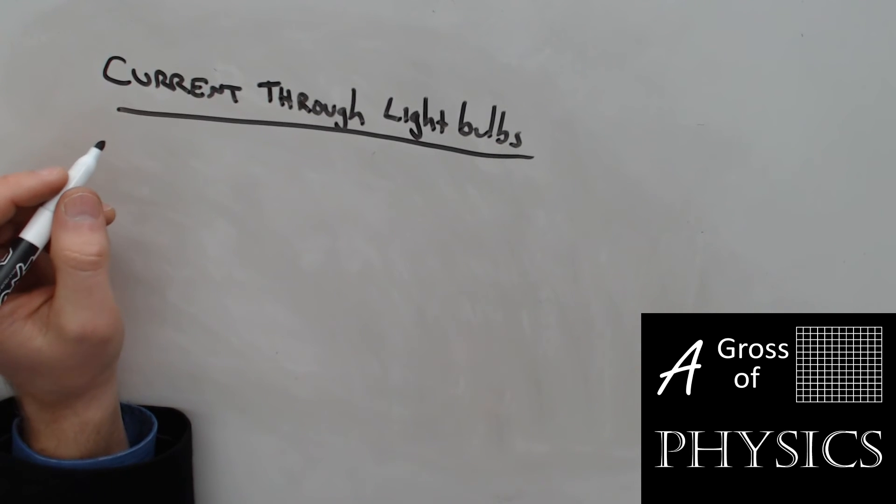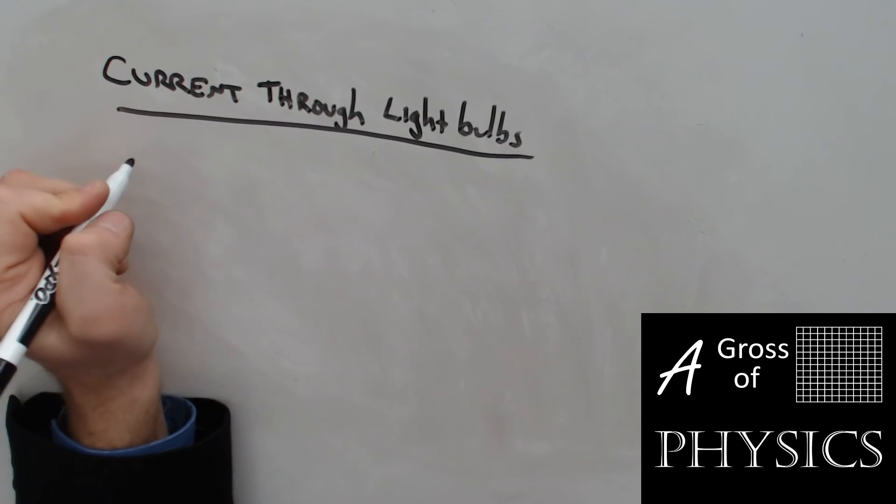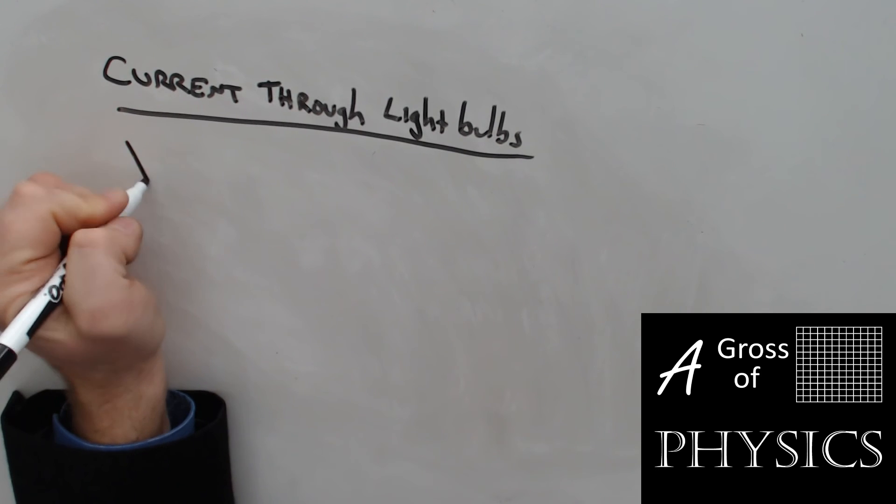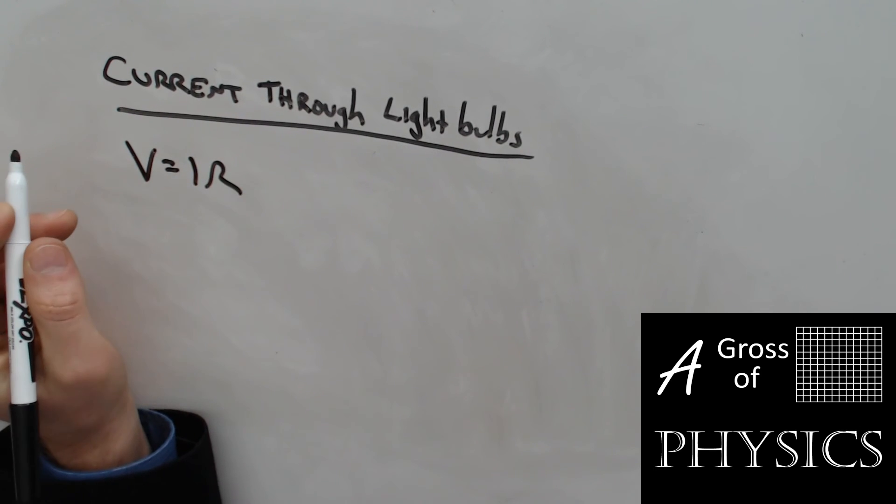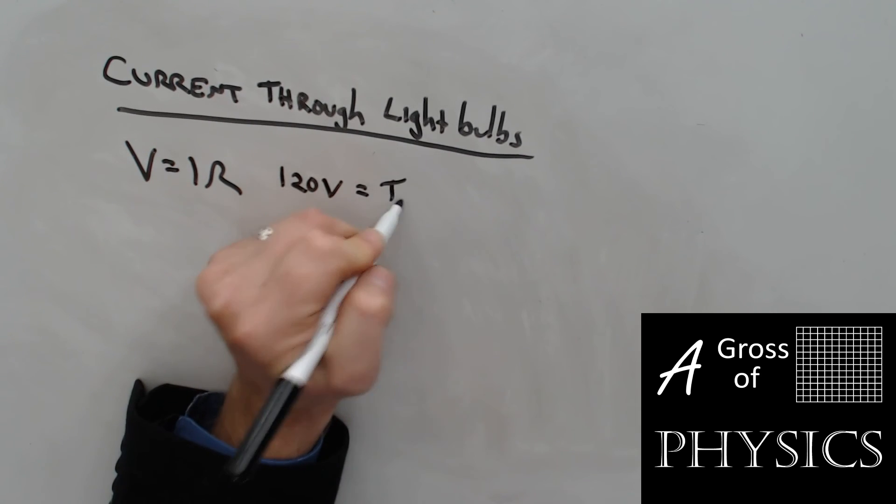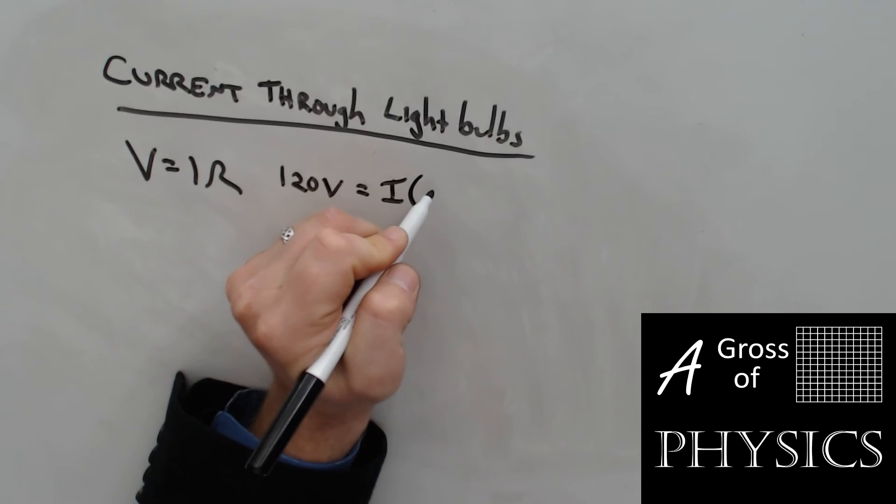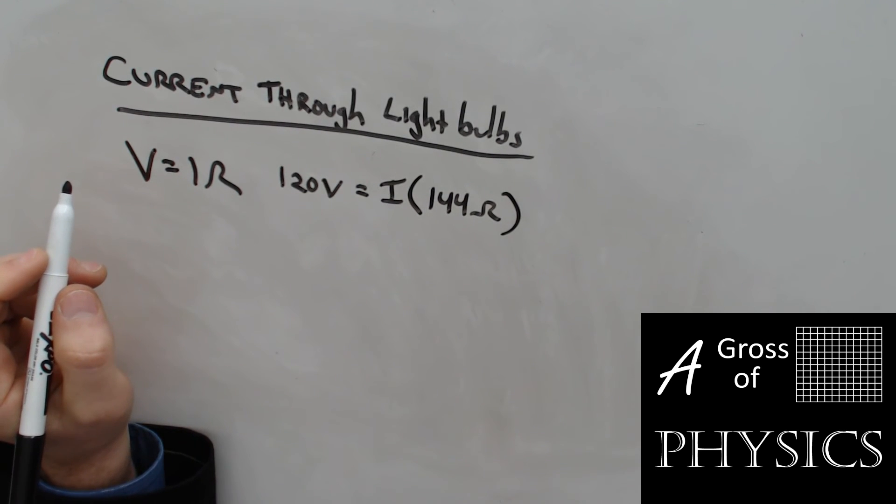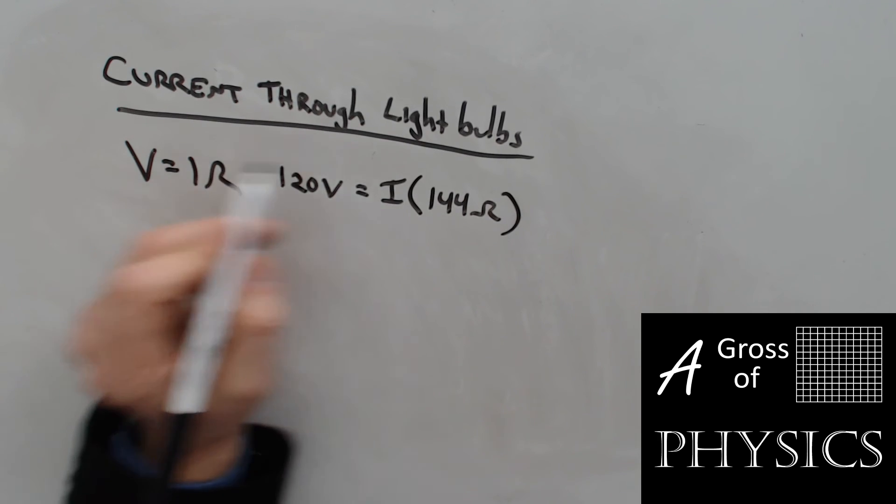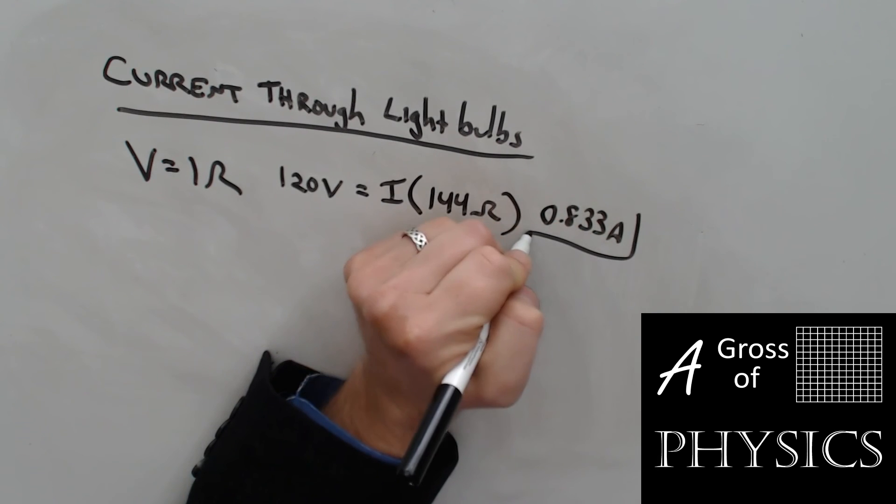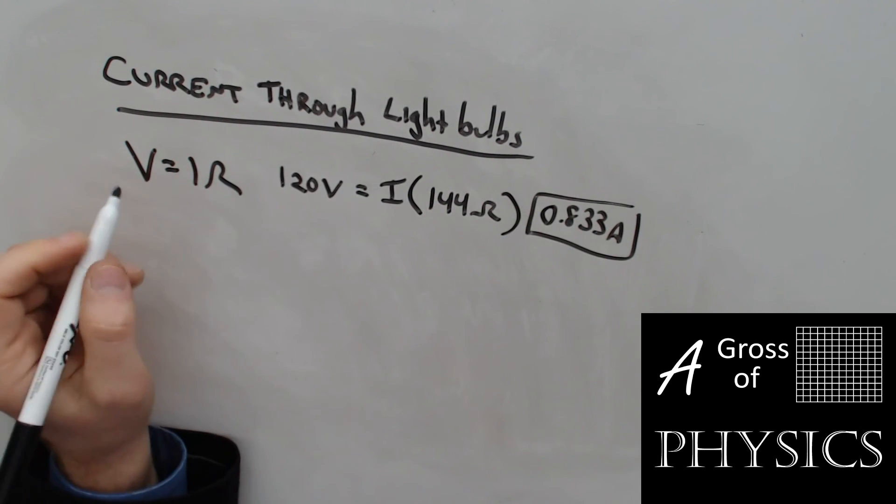We discussed the resistance of the light bulbs. But if we plug them into the outlet, how much current is flowing through each? The equation is V equals IR, and we have 120 volts, the current, and for a 100 watt bulb, we had 144 ohms. So 120 divided by 144 gets me 0.833 amperes.